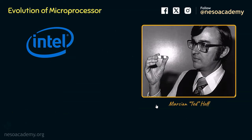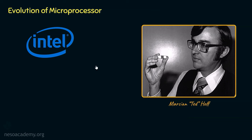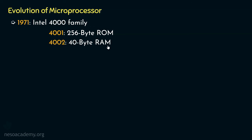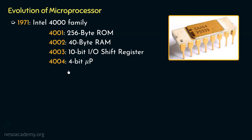At that time, Intel engineer Marcian Ted Hoff felt that a general-purpose logic device could replace the separate multiple components. This idea led to the development of the first microprocessor, and as a result, in 1971, as a member of Intel's 4000 family — which comprised the 4001 (256-byte ROM), the 4002 (40-byte RAM), the 4003 (10-bit input/output shift register), and the 4004 — the world's first 4-bit microprocessor was introduced.